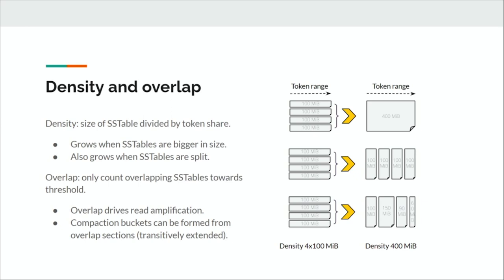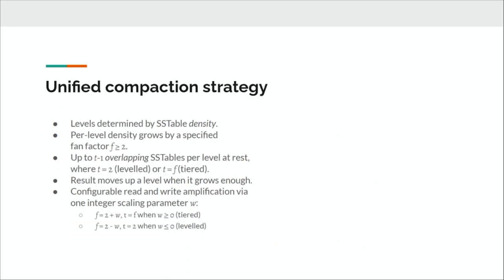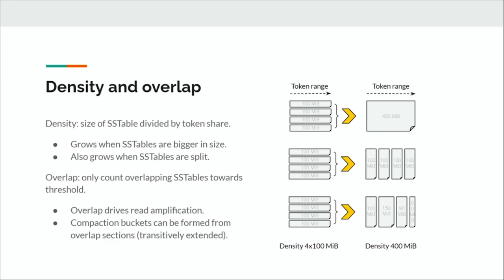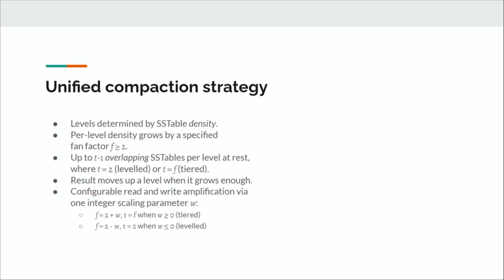Using density instead of size, levels are now determined by SSTable density. Every compaction grows density by the fan factor: four 100 MB SSTables each covering the full range have a combined density that's 400 MB, and the output density is 400 MB — four times bigger, moving to the next level. The threshold is applied only to overlapping SSTables rather than all SSTables on a level, which avoids unnecessary compactions for non-overlapping SSTables that don't increase read amplification.